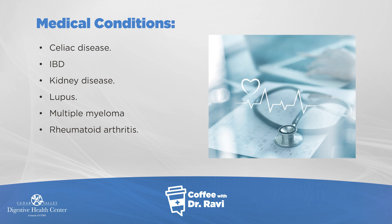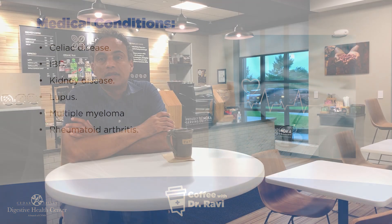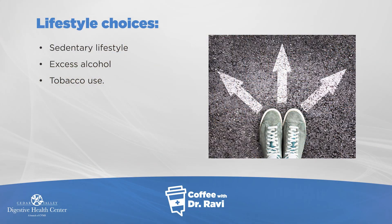There are some medical conditions, and if you have any of these check with your doctor about bone thinning and osteoporosis. That includes celiac disease — which is a sensitivity to gluten — inflammatory bowel disease, kidney disease, rheumatoid arthritis, multiple myeloma, and lastly certain lifestyle factors such as being sedentary, excess alcohol, or tobacco use have all been associated with osteoporosis.